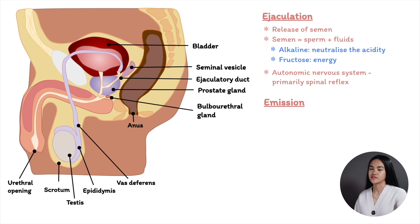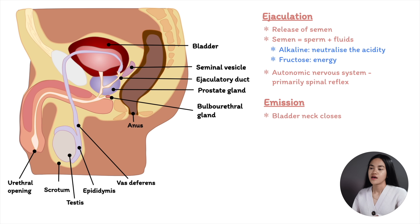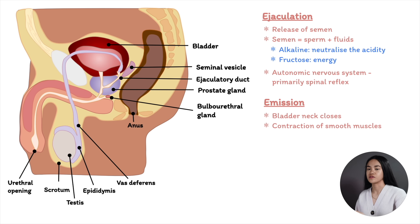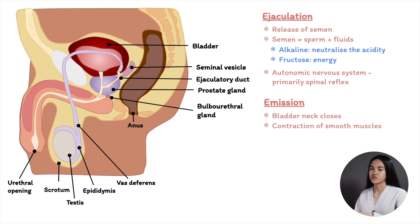In the emission phase, the bladder neck closes — we don't want seminal fluid entering the bladder or urine leaking out. The smooth muscles of the epididymis, vas deferens, ejaculatory ducts, seminal vesicles, and prostate contract and empty the sperm and fluids into the urethra.